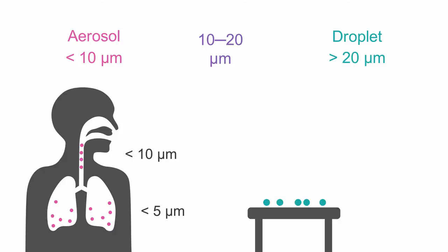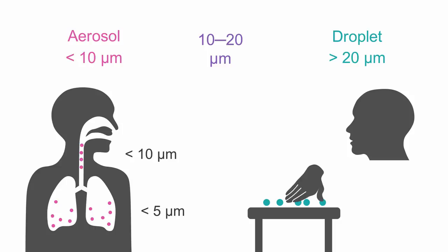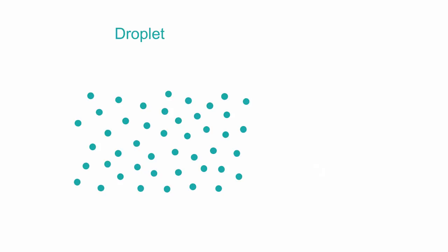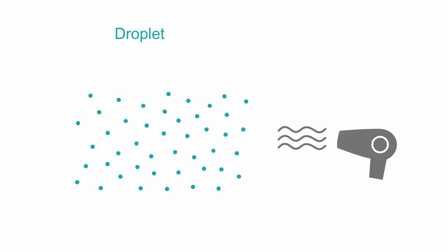When droplets fall on surfaces, uninfected individuals can pick them up and by touching their face can get infected. That's why hand washing is so crucial. To make matters more complicated, when the water component of droplets dries up in the air and the wind and temperature conditions are right, the remaining bits of floating virus are called droplet nuclei, and these can then behave like aerosol too.